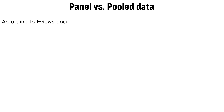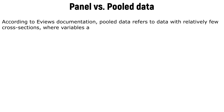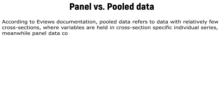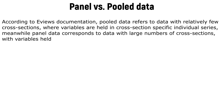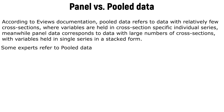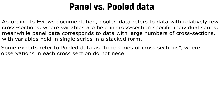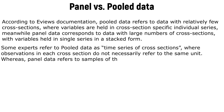Panel vs. Pooled Data: According to EViews' documentation, pooled data refers to data with relatively few cross-sections where variables are held in cross-section-specific individual series. Meanwhile, panel data corresponds to data with large numbers of cross-sections with variables held in single series in a stacked form. Some experts refer to pooled data as time series of cross-sections where observations in each cross-section do not necessarily refer to the same unit, whereas panel data refers to samples of the same cross-sectional units at multiple points in time.